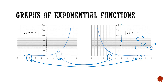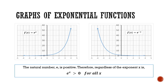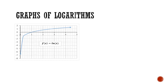It's also worth remembering that e to the power of x will be greater than 0 for both of these functions, because e is always positive, so when raised to any value of x it's always going to be greater than 0. That's our exponential graphs covered — let's now look at the graphs of logarithms. Here we have f of x is equal to ln of x.